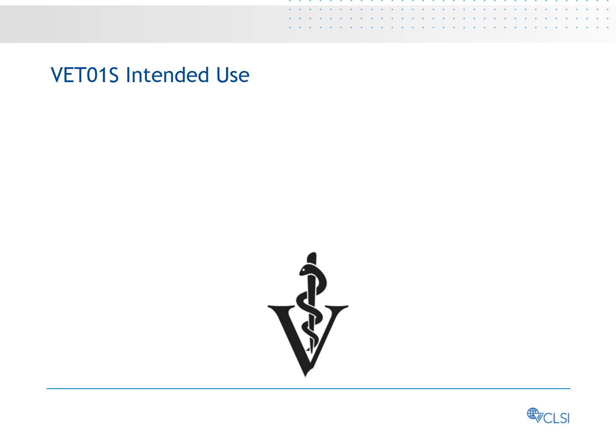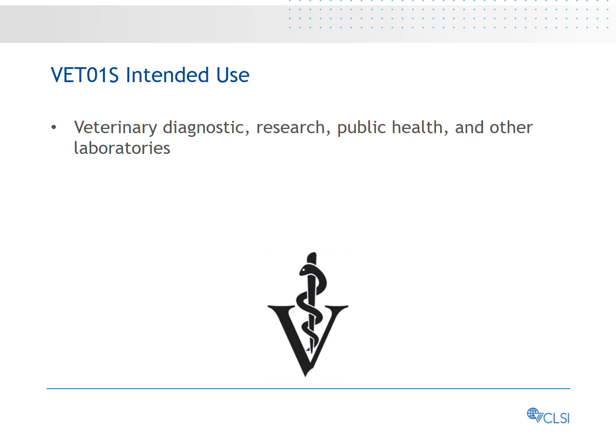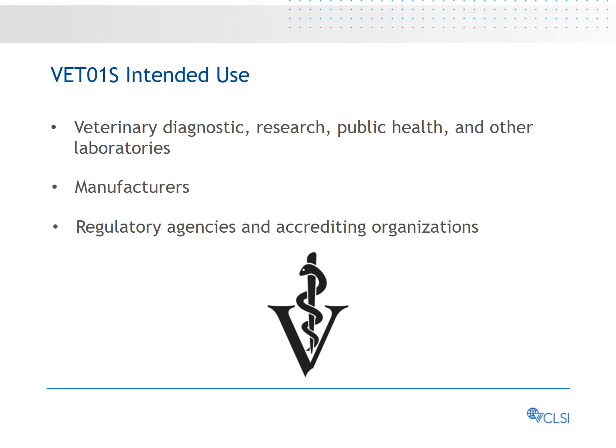VET-01S is intended to be used by veterinary diagnostic, research, public health, and other laboratories, manufacturers, and regulatory agencies and accrediting organizations. Although regulatory agencies do not set veterinary-specific breakpoints, and veterinary antimicrobial susceptibility testing equipment manufacturers do not have pre-approval or regulatory clearance requirements for veterinary isolates, those manufacturers are expected to validate their methods against CLSI reference methods. CLSI does not evaluate these data, but VET-01S aids manufacturers in developing testing devices that are clinically appropriate, safe, and effective, and provides guidance to pharmaceutical manufacturers for testing their products for veterinary application.